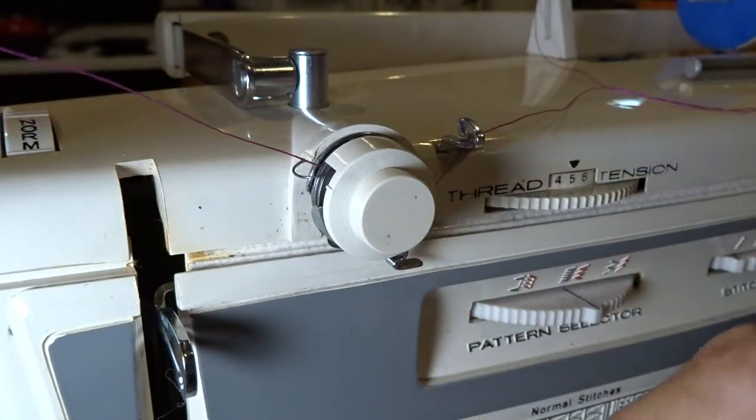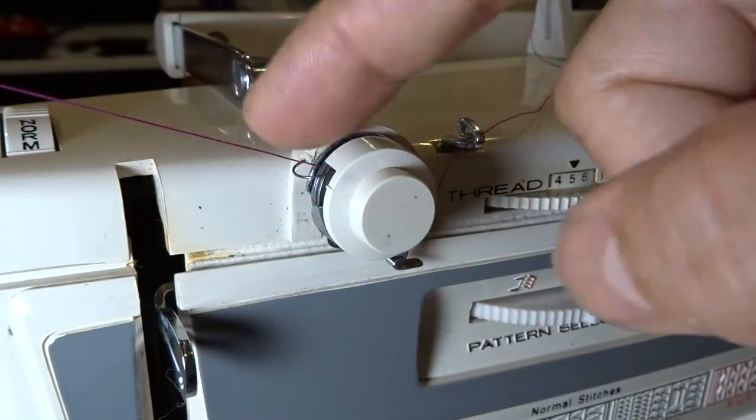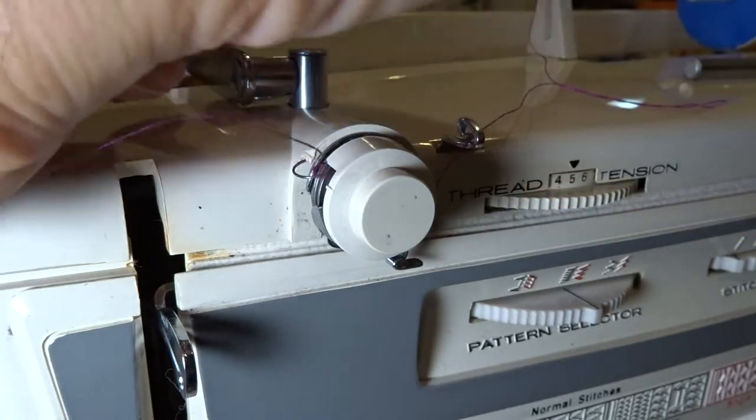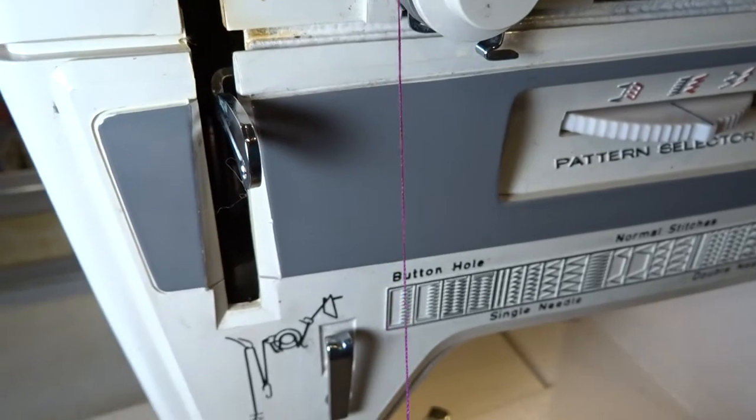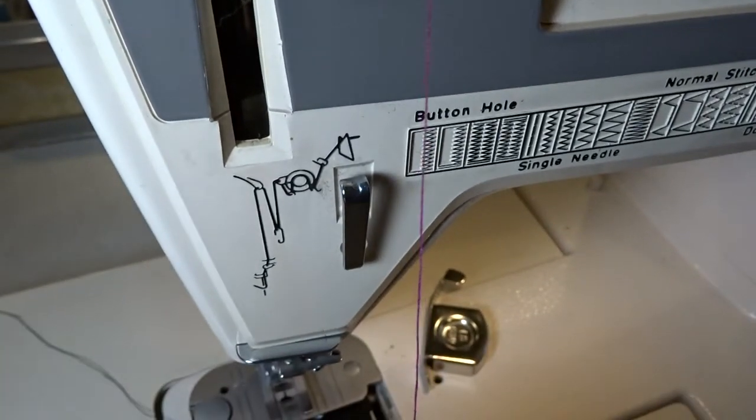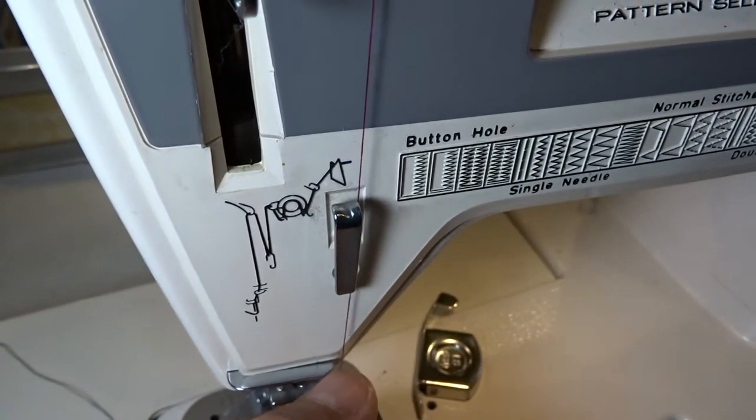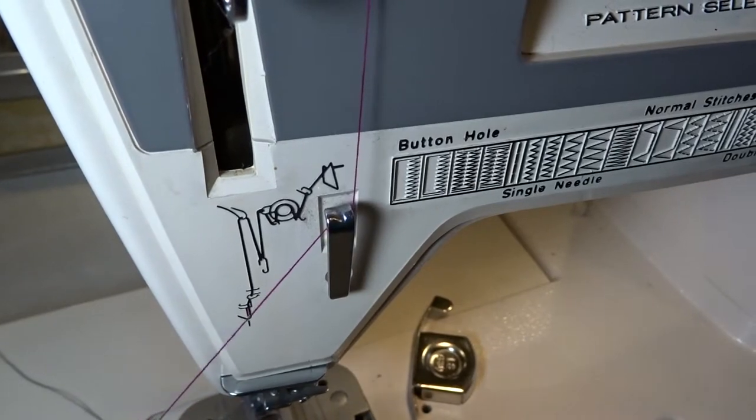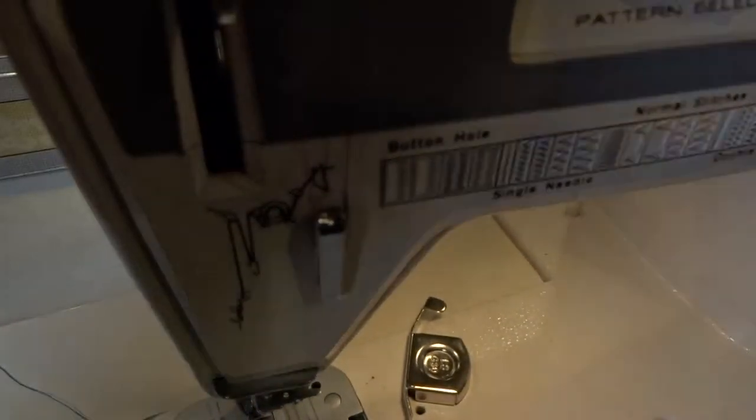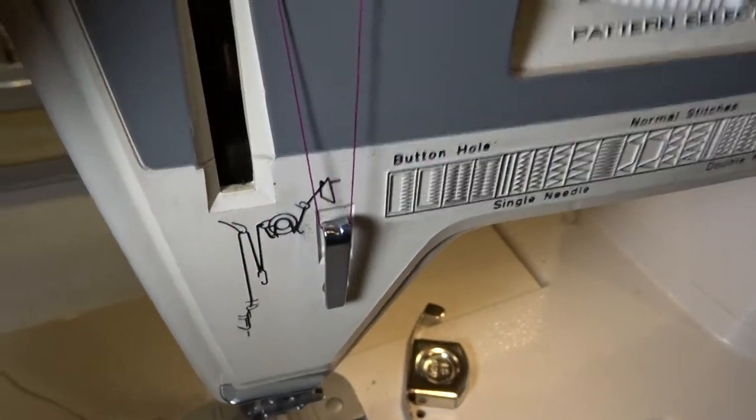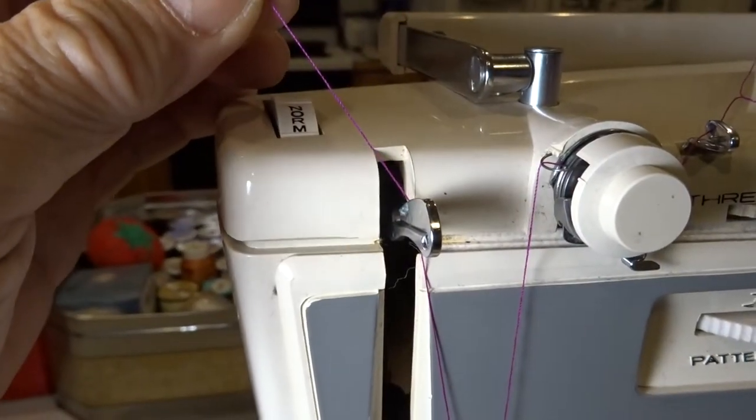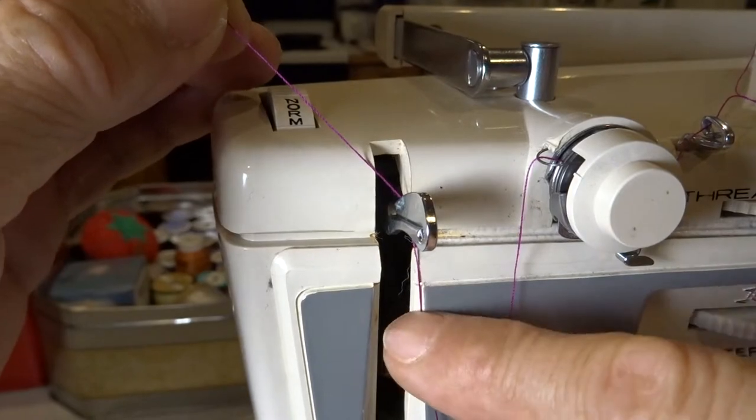Once you have this one right here, bring it down over here, then back up again into the lever. This one on the other side of the lever is actually a hook to hook the thread and bring it back down again.